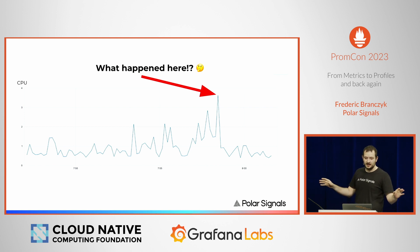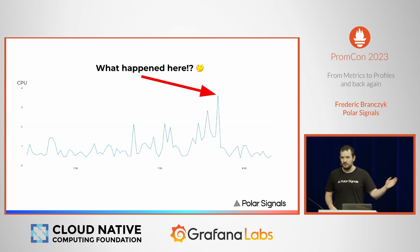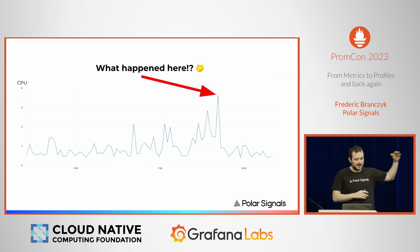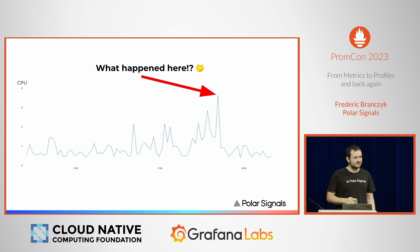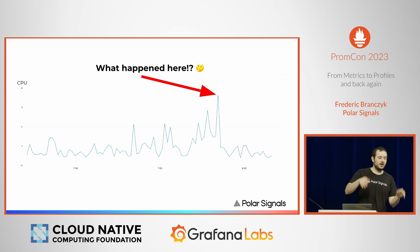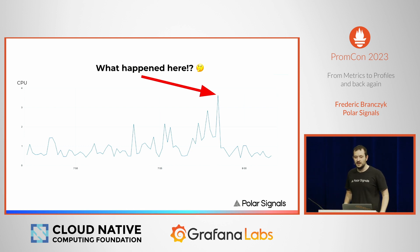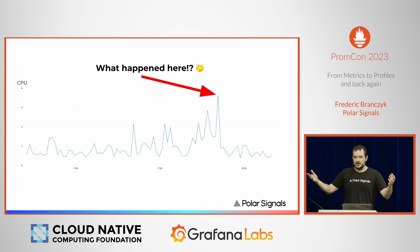Before I get into anything, I want to start with a problem. We've probably seen CPU graphs that look something like this, where we have some sort of spike, and we're asking ourselves: this baseline is typically around one CPU core — why is it now spiking so much? There will be some theories in the team. Someone will say this is probably garbage collection, someone will say it's a pathological query that one user always does. But theories are just theories, and what's better than theories? It's data.